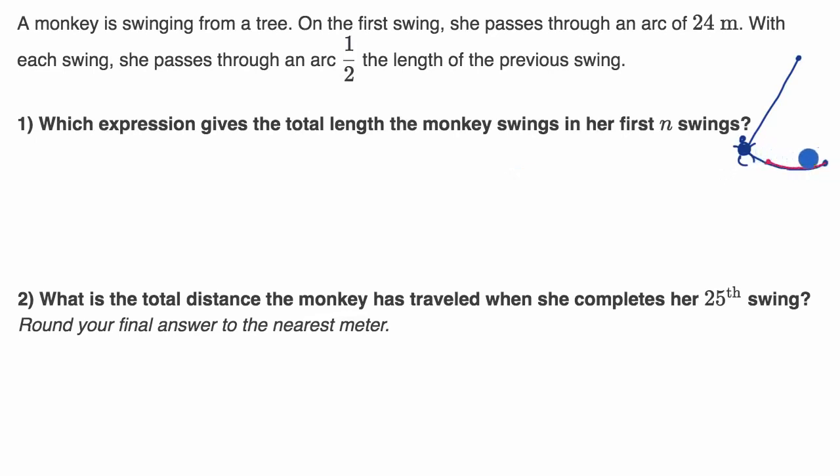And then on the next swing, she would swing half of that, which would be six meters. And so she might swing like this. And that makes sense. That's consistent with our experiences swinging from trees, for those of us who've done that.